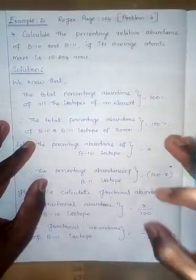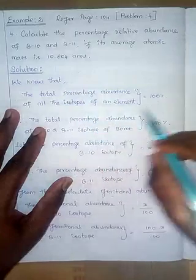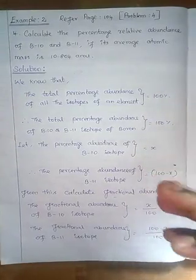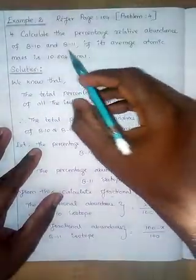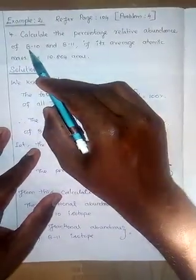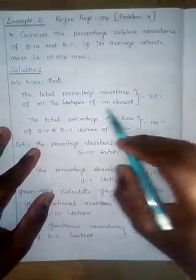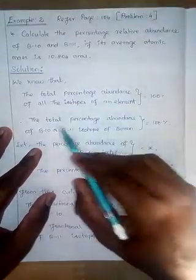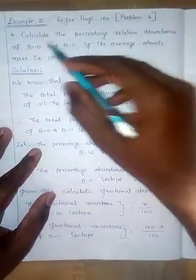The idea is simple: the total percentage of all the isotopes of an element is equal to 100%. If you add all the percentage abundances of the isotopes, the answer will be 100%. So in this example, we will calculate the relative percentage abundance of Boron-10 and Boron-11, given that its average atomic mass is 10.804 amu. Since boron has two isotopes, the total percentage abundance of Boron-10 and Boron-11 together must equal 100%.